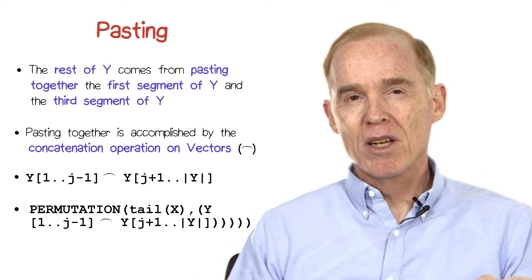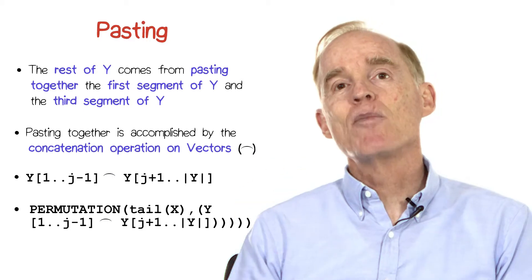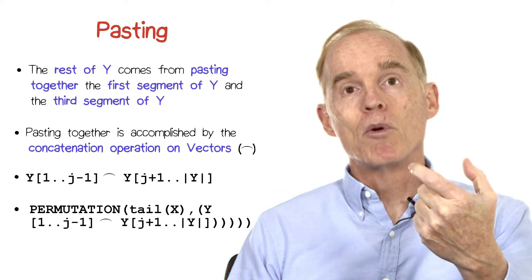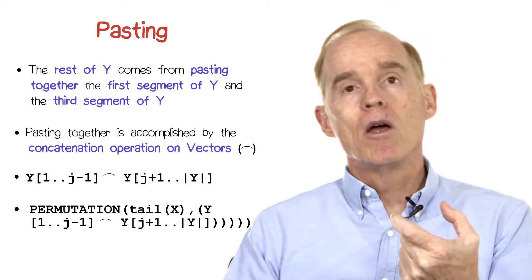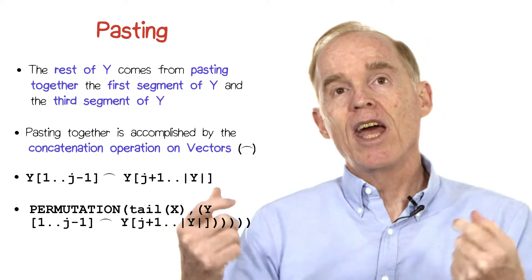So we've left out the first element in x, and now we're going to leave out that same element in y by pasting together the first j minus 1 elements. And then from j plus 1 to n,